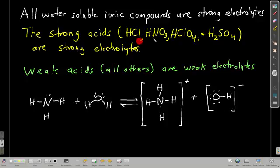These strong acids, when put into water, break apart into hydrogen ion and the anion — they're strong electrolytes. So nitric acid breaks apart into H⁺ and NO₃⁻. With sulfuric acid, H₂SO₄, it's only the first proton that's strongly acidic — making it a strong electrolyte — so one H⁺ comes off, leaving HSO₄⁻. The weak acids are any acids — starting with hydrogen — that are not one of those four strong acids. Those are weak electrolytes.